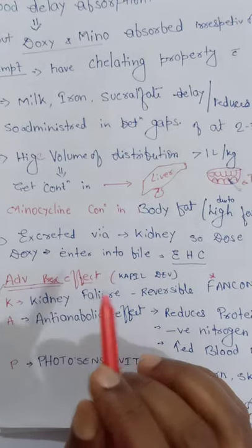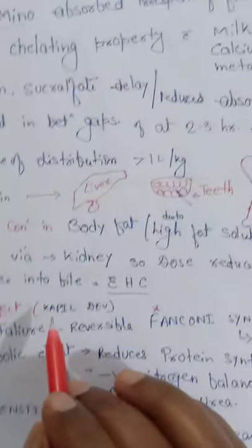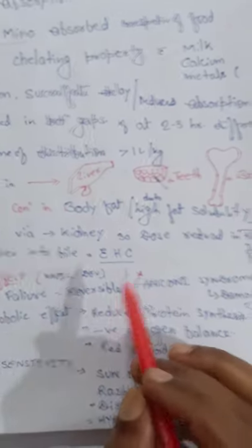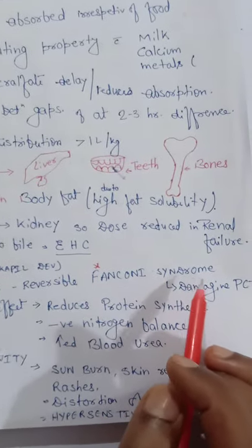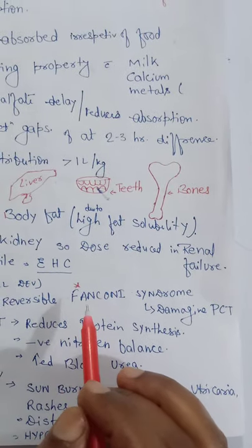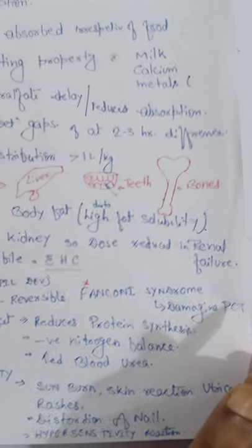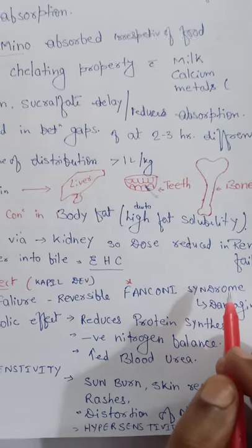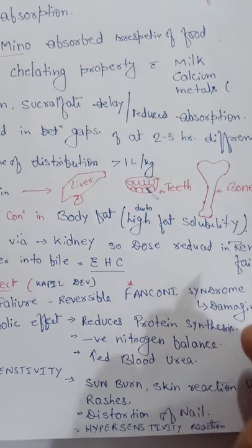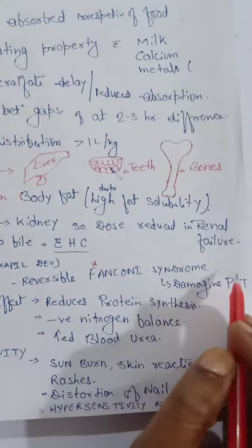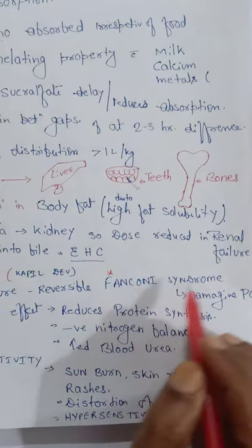Adverse effects of tetracycline — mnemonic: Kapil Dev. K for kidney failure, including reversible Fanconi syndrome. In Fanconi syndrome, there is damage to the proximal convoluted tubules. This occurs when a patient takes expired tetracycline drugs.